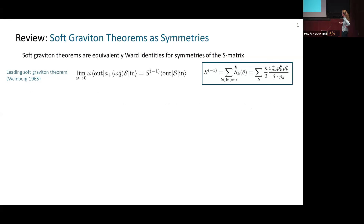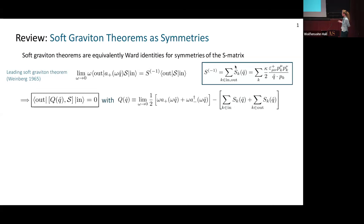The soft factor involves the gravitational coupling kappa, the graviton's polarization and direction, and the external particles' momenta. We can rewrite this as the action of an infinitesimal symmetry on the S-matrix, or a charge that commutes with the S-matrix, parameterized by the graviton's direction q-hat. This charge has two parts: a soft part that inserts soft gravitons in the in and out states, and a part involving the soft factors for each external particle.